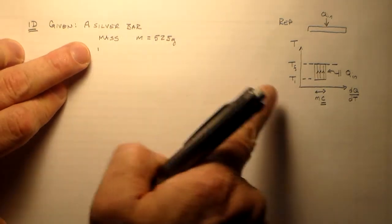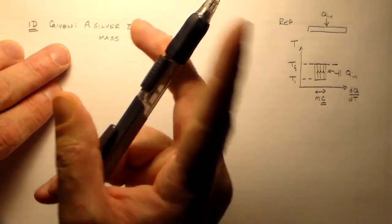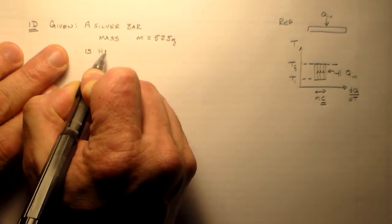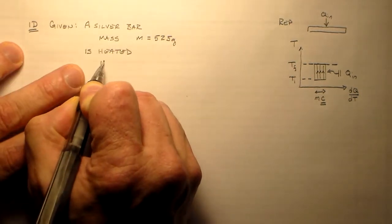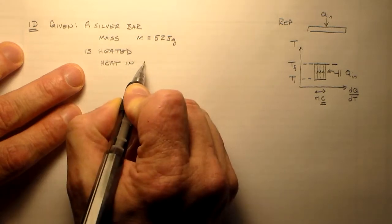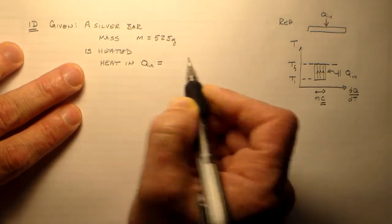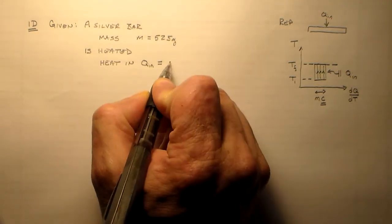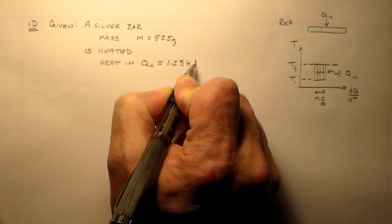We know that it undergoes a temperature change. We're given that and we know that it is heated. And so, we put some heat in. Heat into our system. QN. And that amount of heat in is 1.23 kilojoules. Heat is energy. Joules are energy.